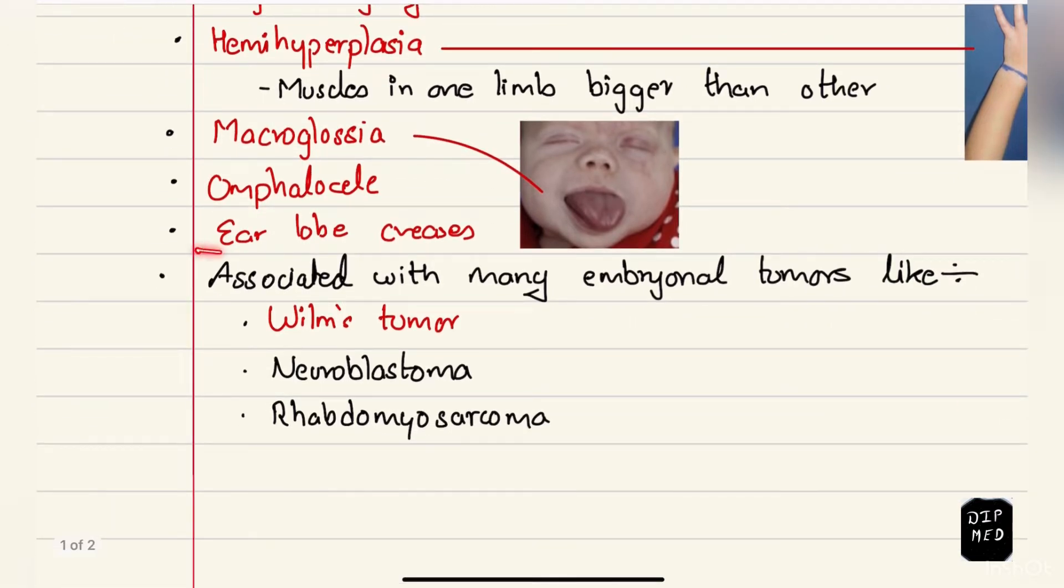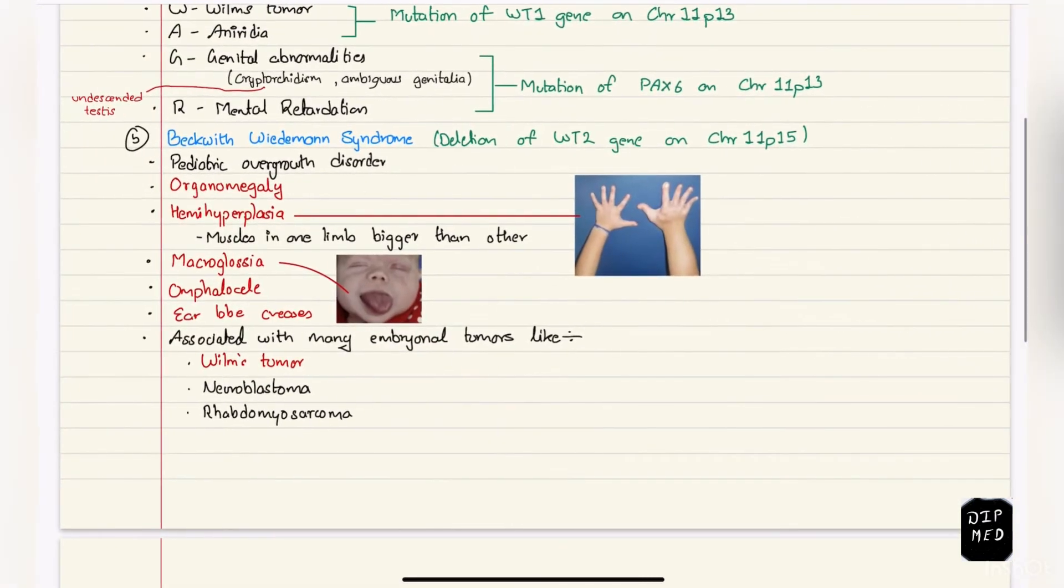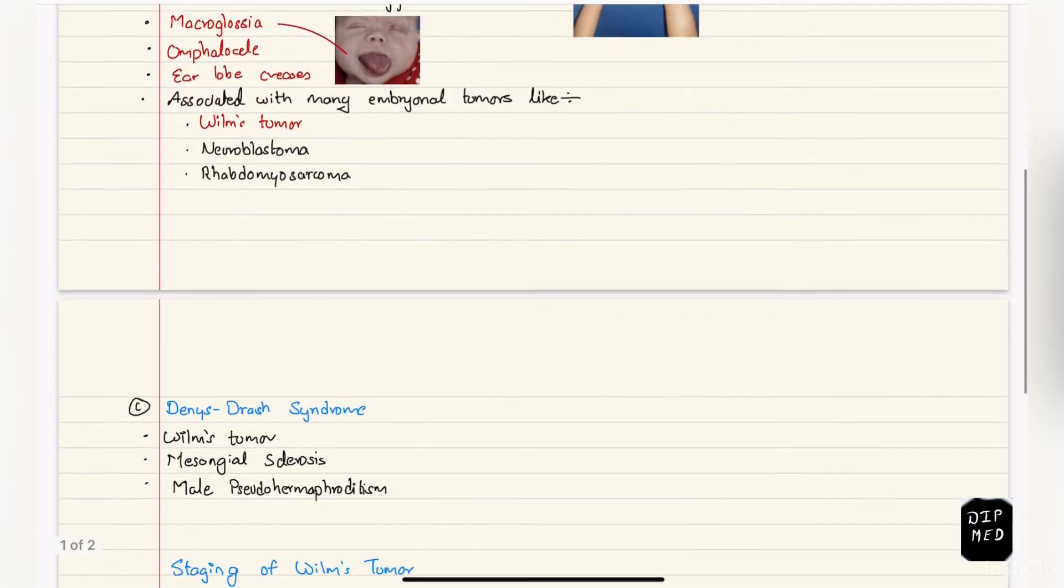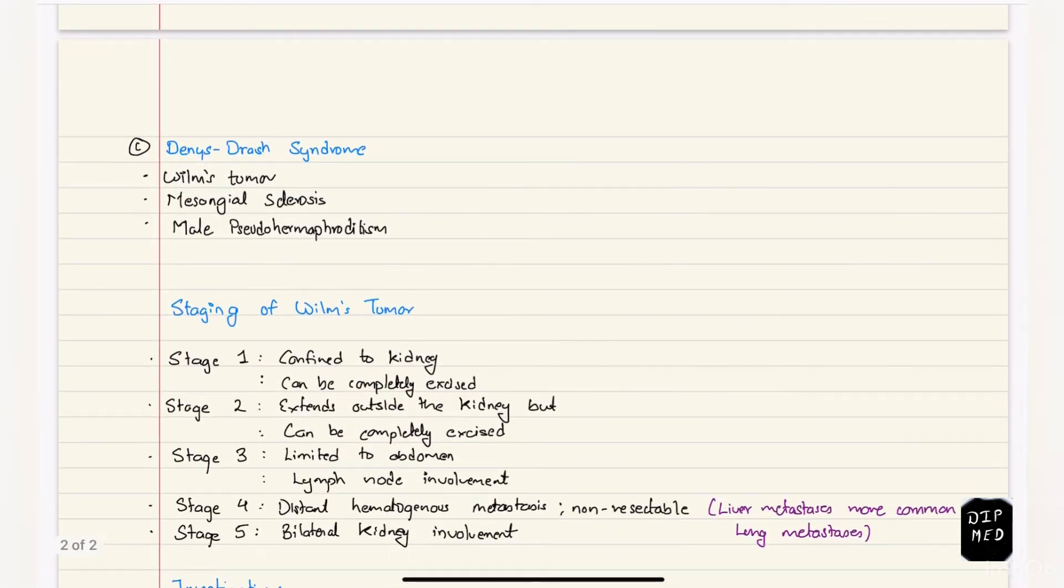There can be creases on the ear lobe and this condition is associated with many embryonal tumors like Wilms tumor, neuroblastoma, and rhabdomyosarcoma. Next is Denys-Drash syndrome, characterized by Wilms tumor, mesangial sclerosis, and male pseudohermaphroditism.